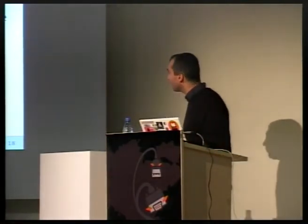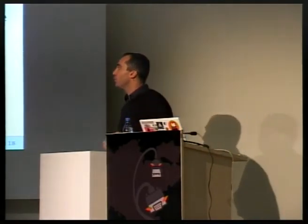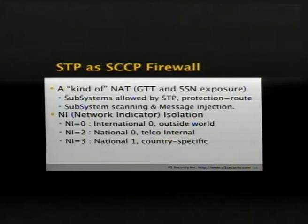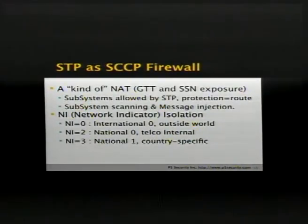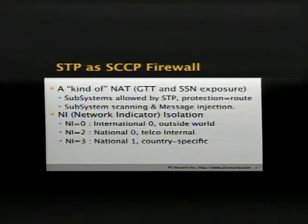That's why scanning is very important here. We have some kind of perimeter description. The network indicator gives you three basic kinds of perimeter: NI0 international, NI1, NI2 which is national zero — basically internal telecommunication network — and NI3 which is national one, which is country-specific, like the roaming between different operators within Germany, for example.